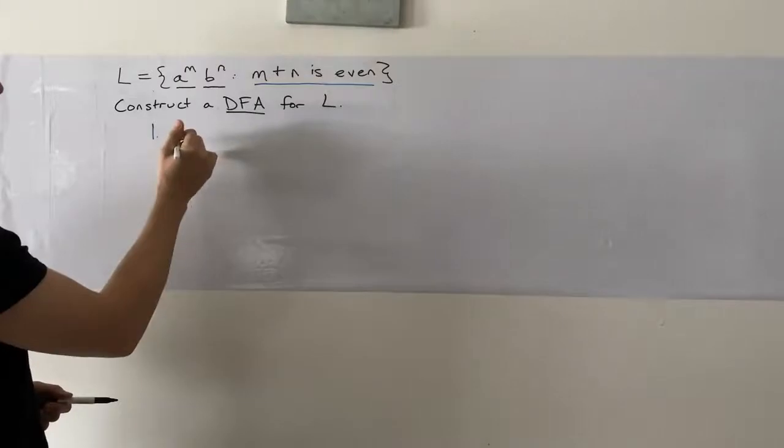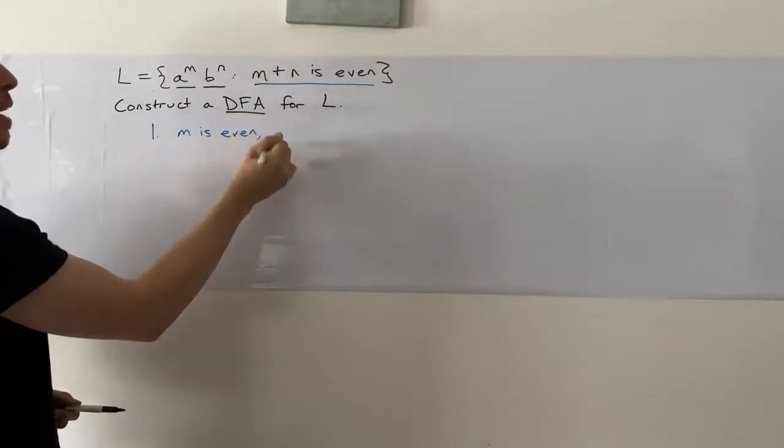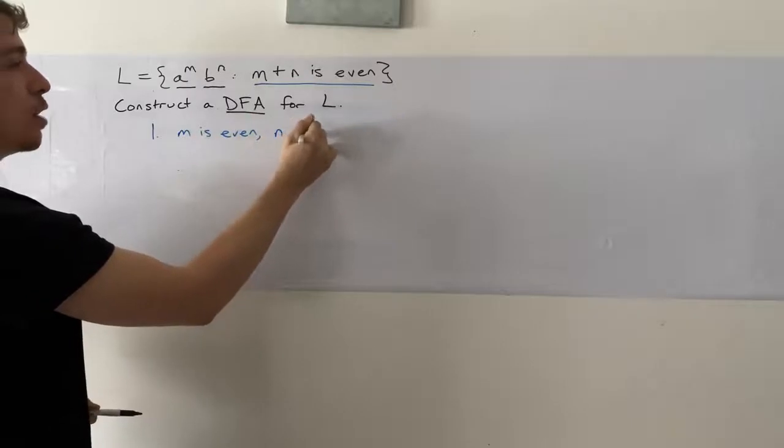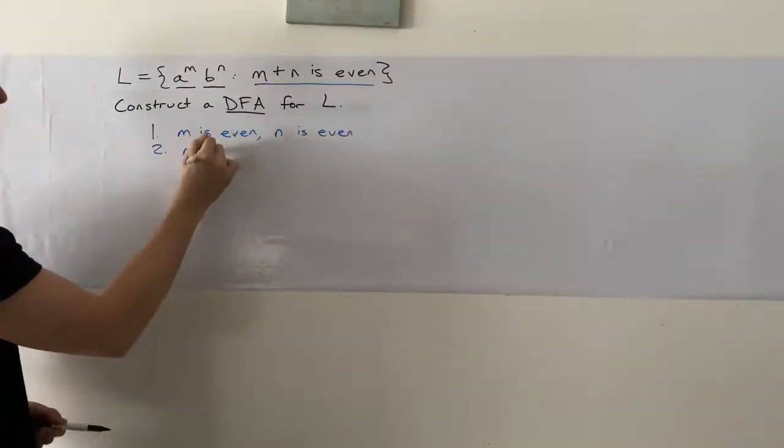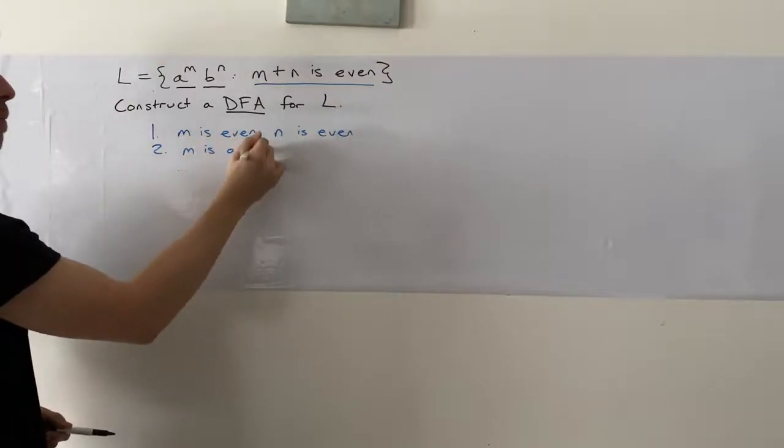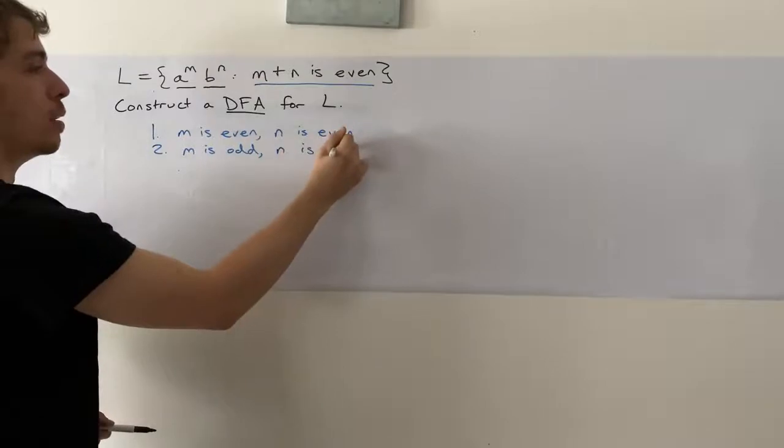So this actually gives us two possibilities, one of which is that M is even and N is also even. And the other case is M is odd, but that implies that N is also odd.